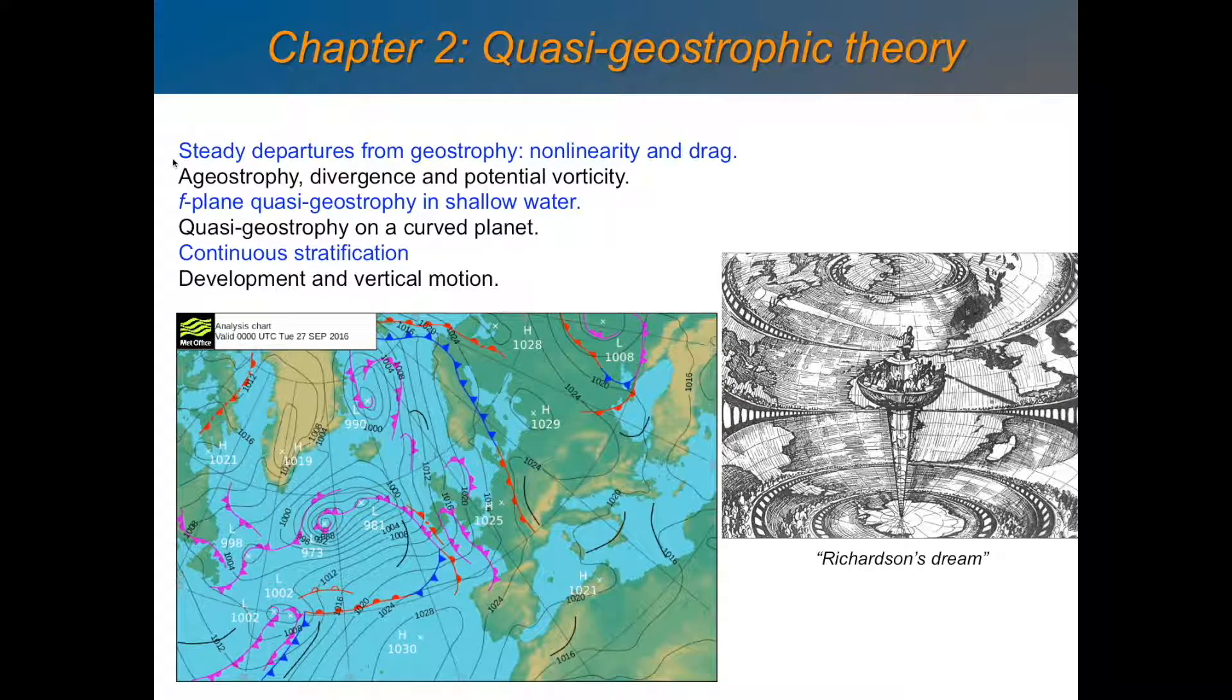Today we're going to talk about the closest thing we can get to geostrophic balance, which also has some extra features. We're going to talk about small departures from geostrophic balance. So that's why it's called quasi-geostrophic, because it's almost geostrophic, but not quite. So we'll start by talking about steady departures from geostrophy, so things which still don't develop in time, but the effects of nonlinearity and drag.